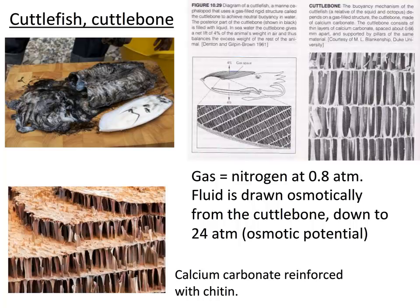A classic example of a hard float is the cuttlefish cuttlebone — familiar from bird cages where budgies peck at it for calcium. It's a calcium carbonate, chitin-reinforced chamber system filled with nitrogen: osmotic potential draws fluid out and nitrogen is left behind. The cuttlebone can withstand external pressure down to about 24 atmospheres, restricting cuttlefish to the top 200 metres of ocean — which is exactly what we observe. Diving deeper causes the cuttlebone to be crushed and buoyancy is lost.